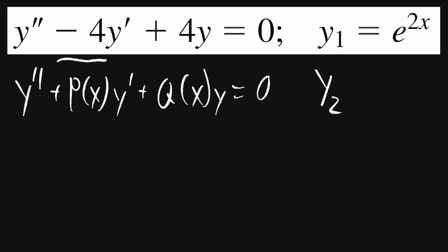The coefficient of y prime is negative 4, so we know p of x is going to be equal to negative 4. And the coefficient of y is 4, so q of x is going to be equal to positive 4.